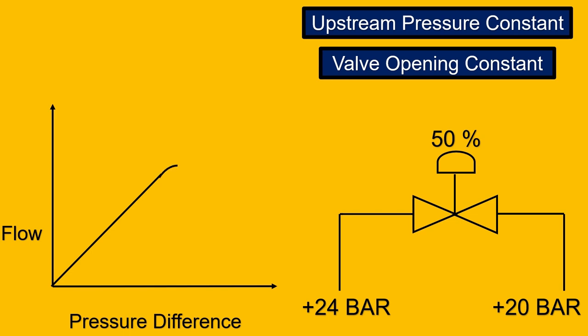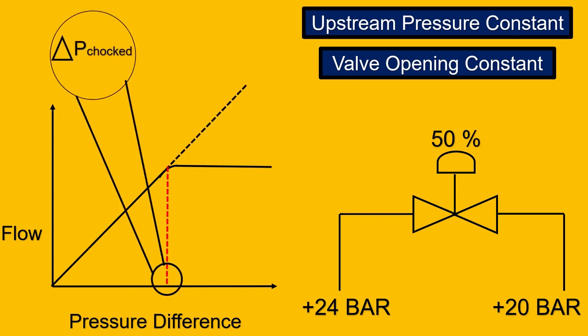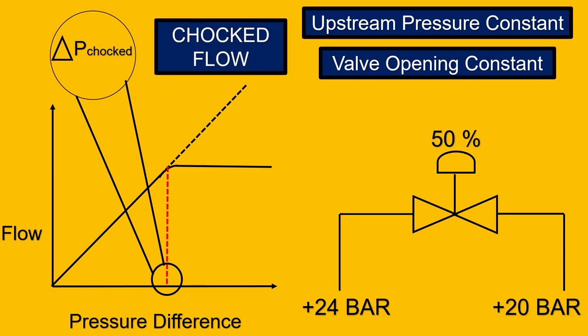Eventually, it could happen that you reach to a point where the pressure difference is not allowing the flow to increase and this point is called as the del p choked and this is against the ideal characteristics where the flow should increase and this phenomenon is called as choke flow.